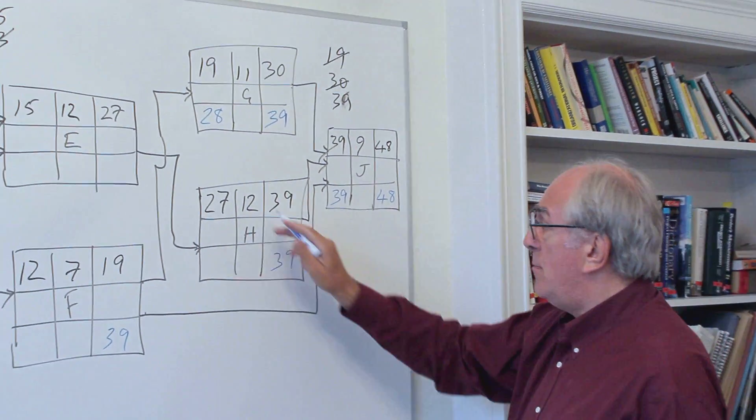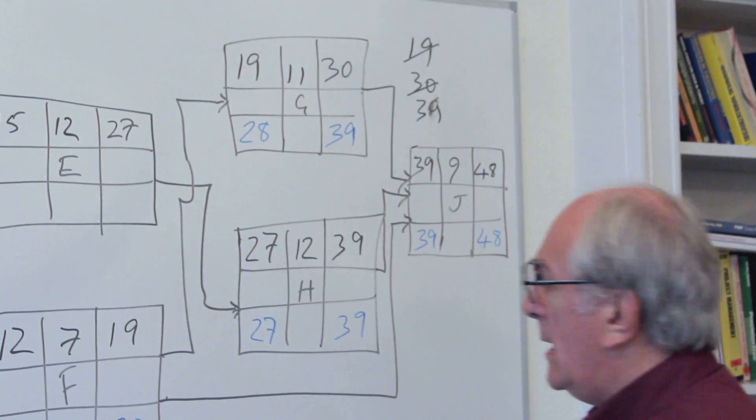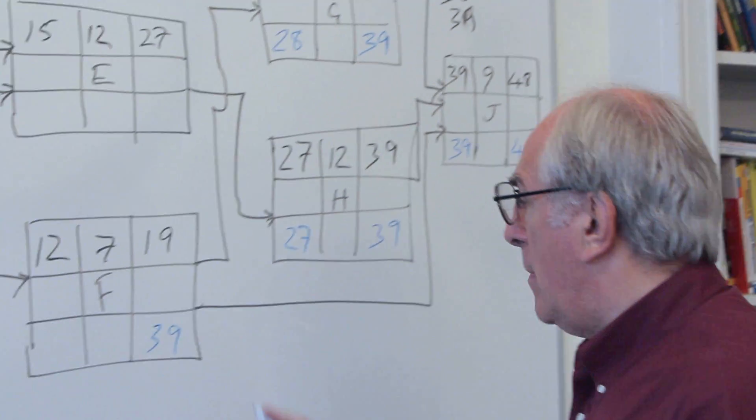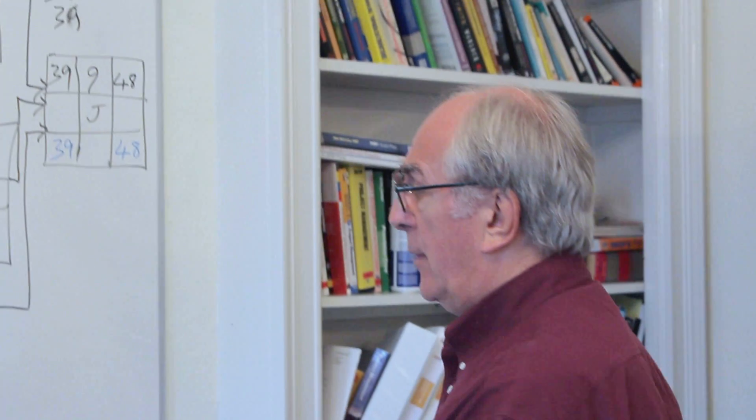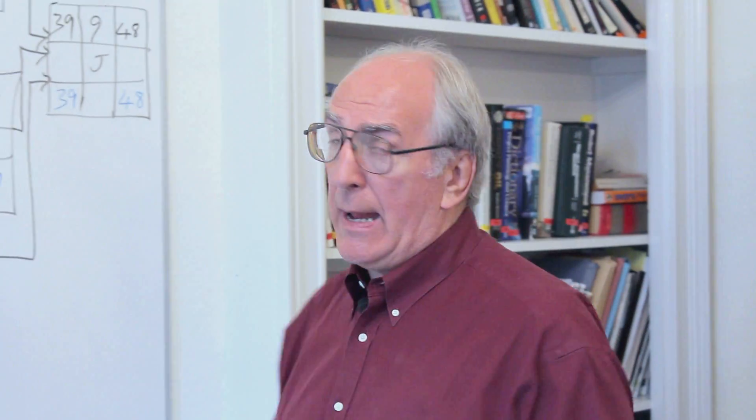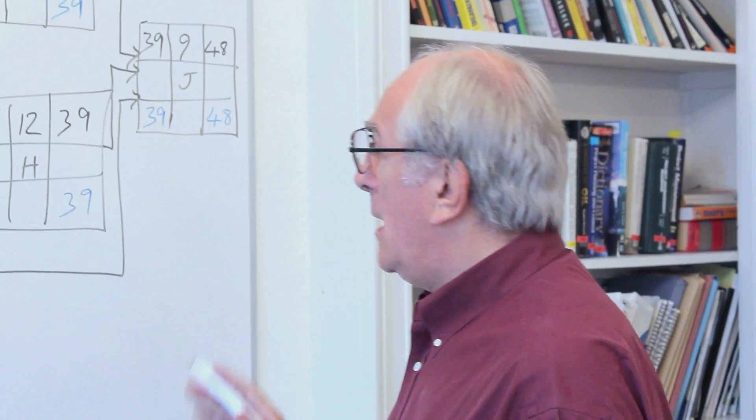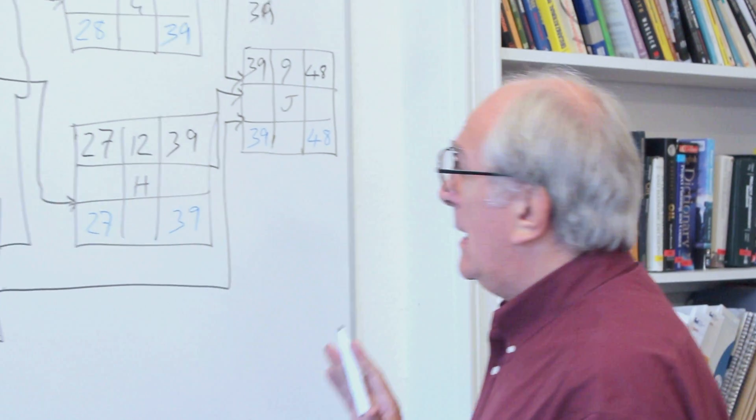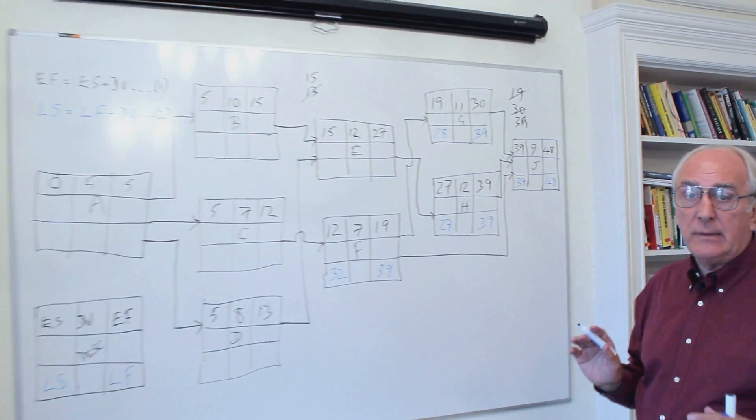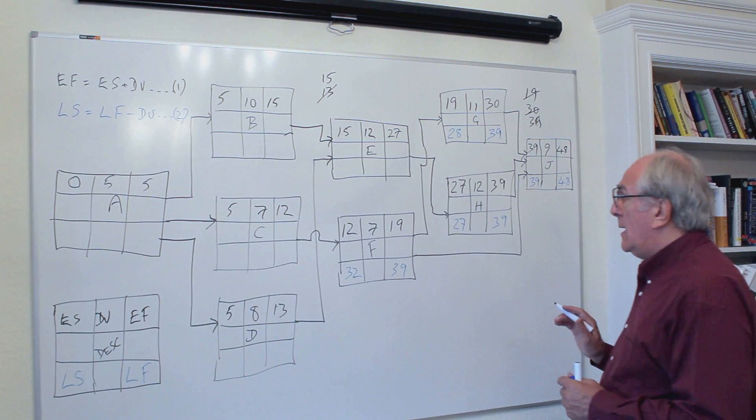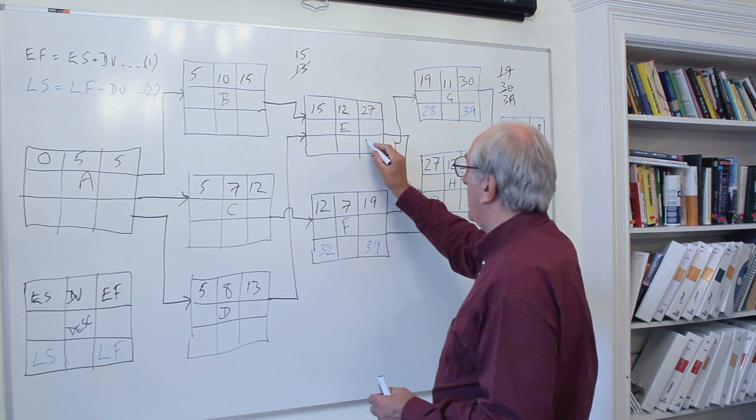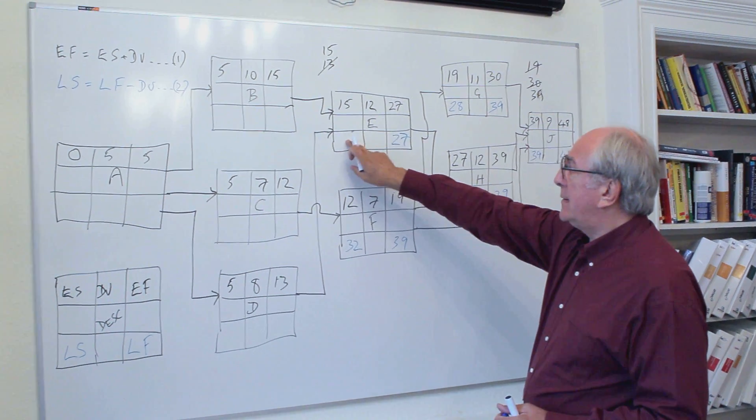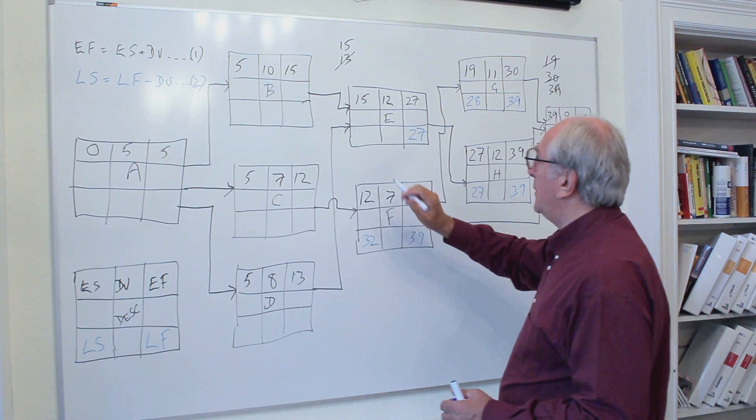On H, we'd have 39 minus 12, which gives us 27. And on F, we'd have 39 minus 7, which would give us 32. So we have the late starts for activities F, G, and H in this backward pass. And we can proceed through this network, eventually finding out all the late start times and the late finish times. So I'll move backwards onto E, and the late finish is determined by the late start of H, which is 27. We can calculate the late start of E by subtracting the duration of 12 from the 27, and that gives us 15.